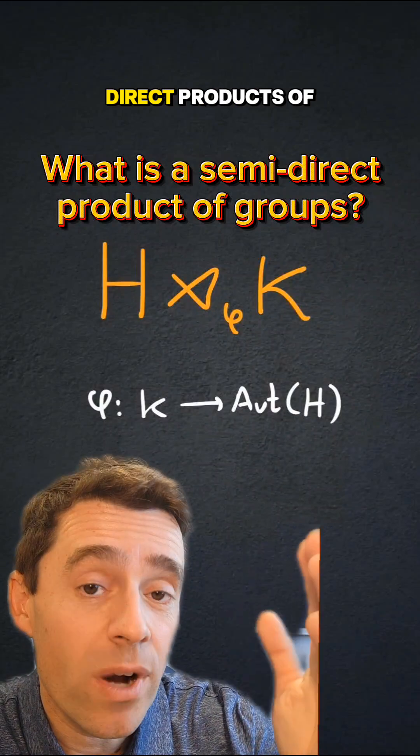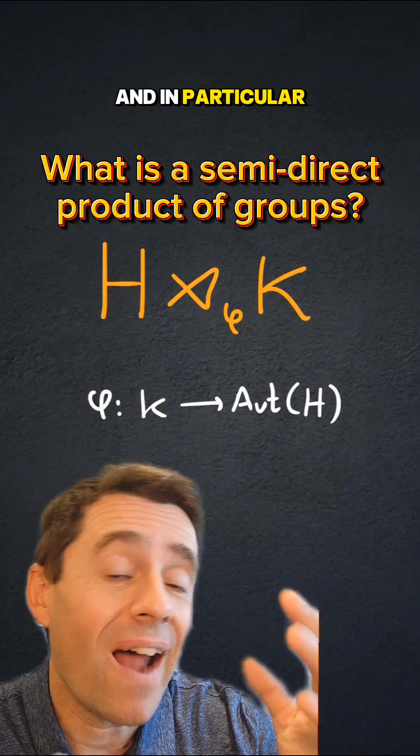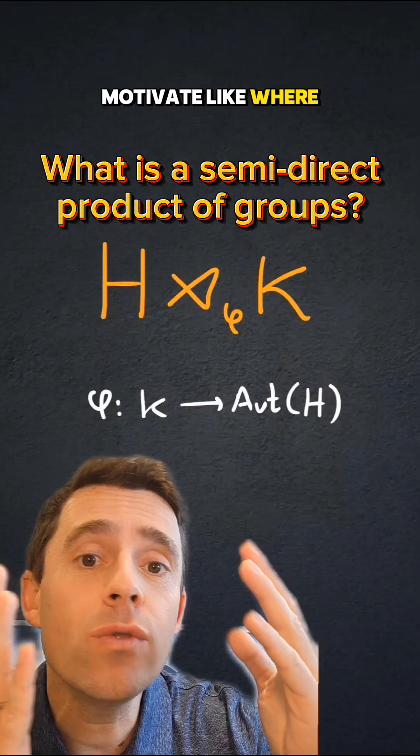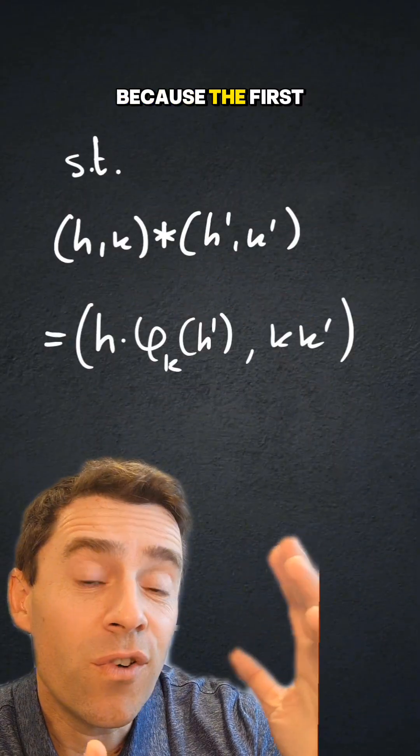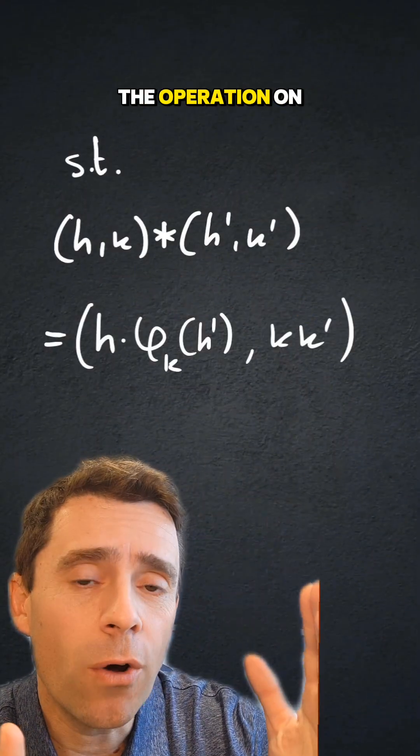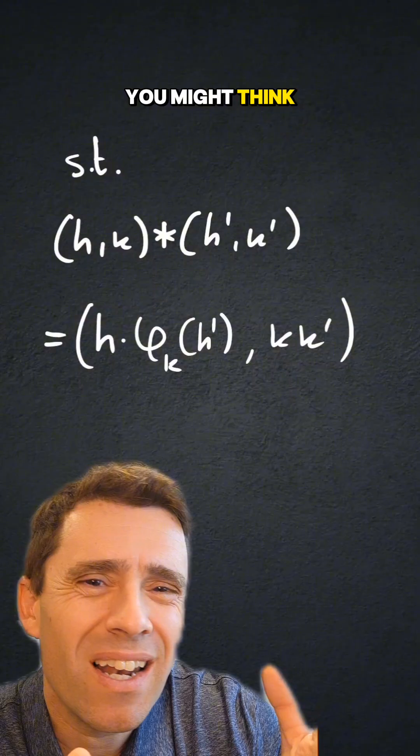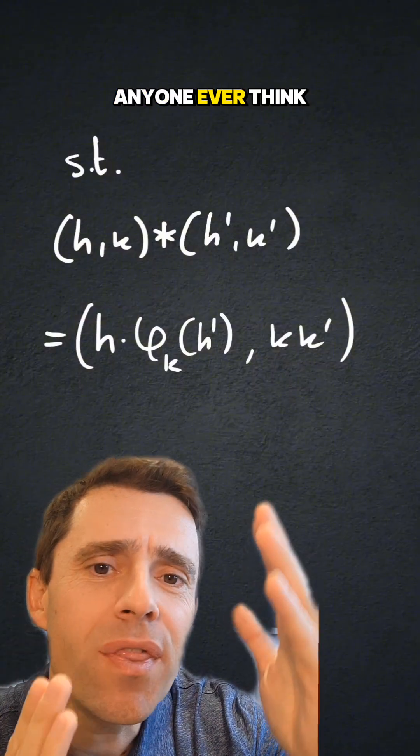In this video, I want to talk about semi-direct products of groups, and in particular, I want to motivate where do they come from? Because the first time you see the operation on a semi-direct group, you might think how could anyone ever think of this?